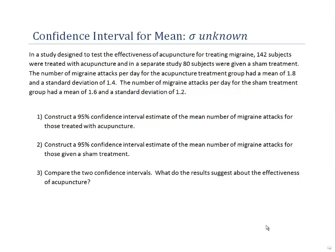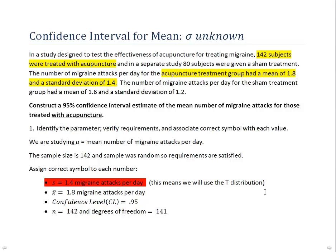In this problem, we're calculating a confidence interval for a mean again, but the key difference is that we don't know the population standard deviation, or sigma. The particular study we're working with examined the effects of an acupuncture treatment or a sham treatment on reducing the number of migraine headaches experienced per day. We'll be calculating two different confidence intervals and comparing them to see if acupuncture effectively reduces the number of migraine attacks. Let's start with the first set of data: subjects treated with acupuncture.